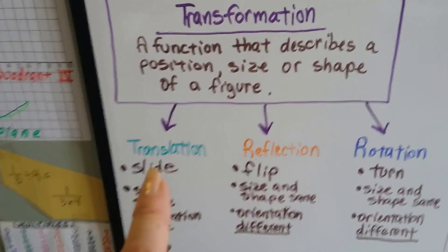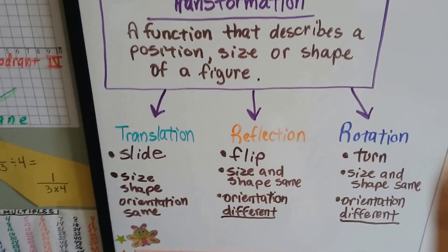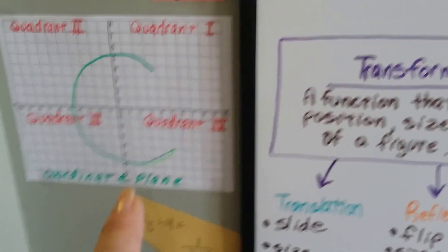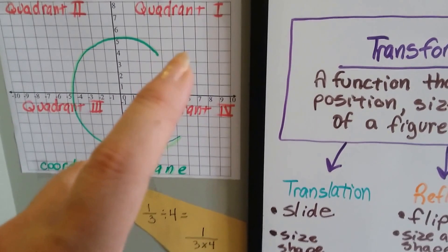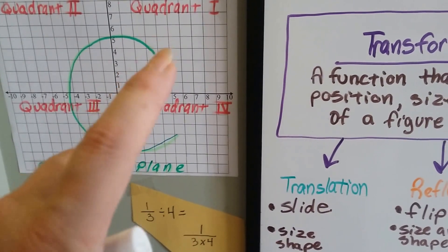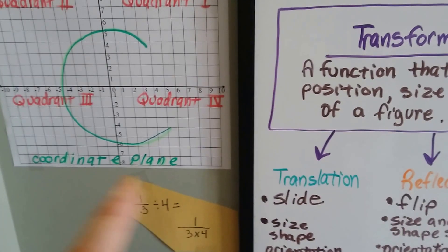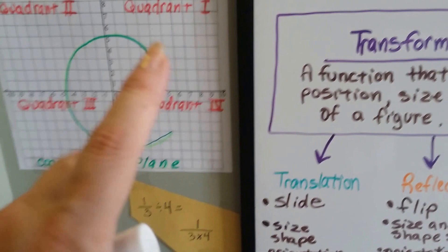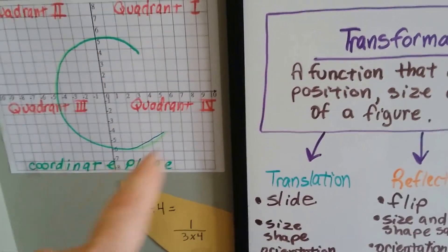We're going to do translations algebraically, and in the next coming up units, we'll do the reflections and then the rotations. Now, I want to remember on the coordinate plane, the way to remember which quadrant is which is it starts like a shape of a C. It starts here and comes around for C as in coordinate plane. Coordinate starts with a C. So think of the letter C. That's quadrant one, quadrant two, quadrant three, and quadrant four. It's the letter C for coordinate.